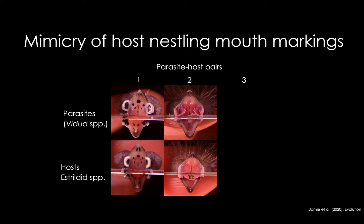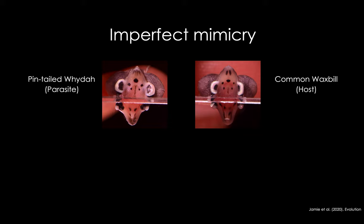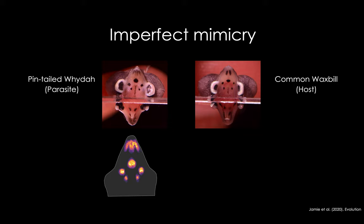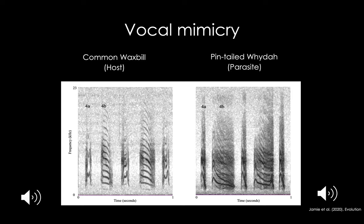Here you have the pin-tailed whydah/common waxbill comparison, the broad-tailed paradise whydah/orange-winged pytilia comparison, and the purple indigo bird/Jameson's firefinch comparison. This mimicry is also supported by statistical analyses exploring colour and pattern variation from a bird's visual perspective — for details I'd recommend reading our recent paper published in Evolution. Our quantitative analysis revealed that while the mimicry is very good, there are often consistent differences in the mouth markings of parasite and host. For example, in the pin-tailed whydah and common waxbill comparison, you can see differences in the pattern of black on the tip of the upper mandible and in the size of the spots on the upper palate. We don't yet know for certain the adaptive significance of these differences, but potential hypotheses are discussed in our Evolution paper.